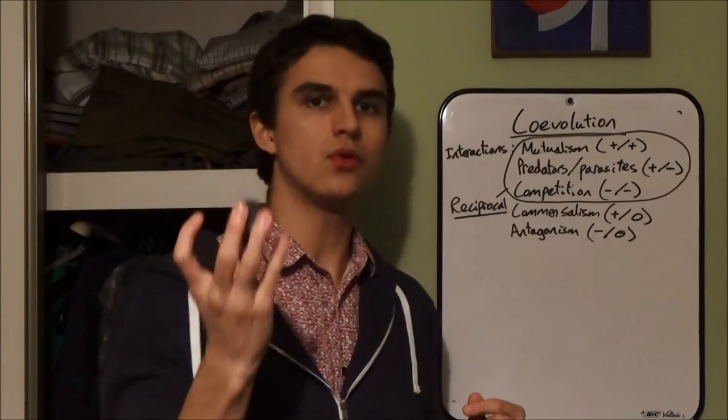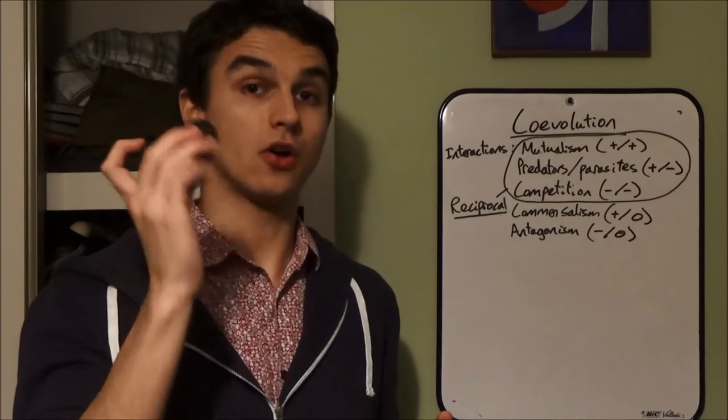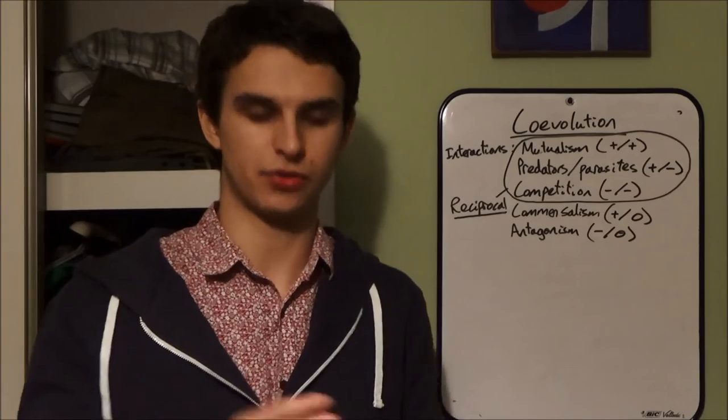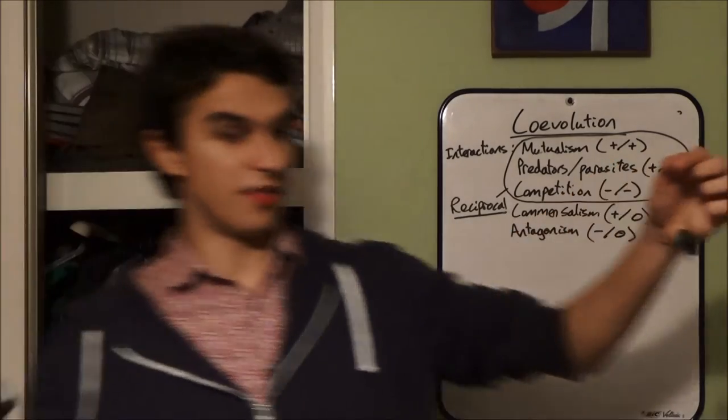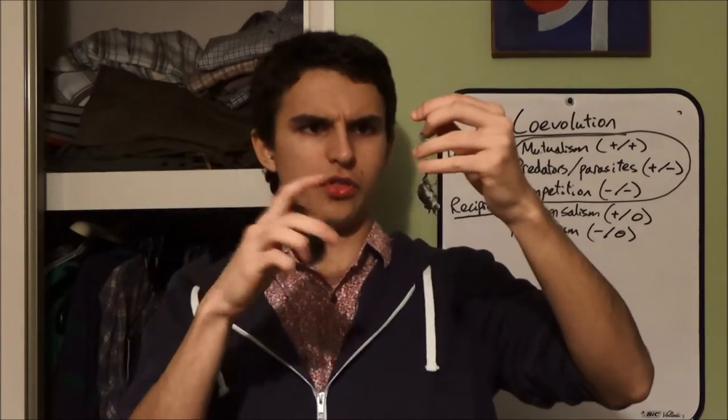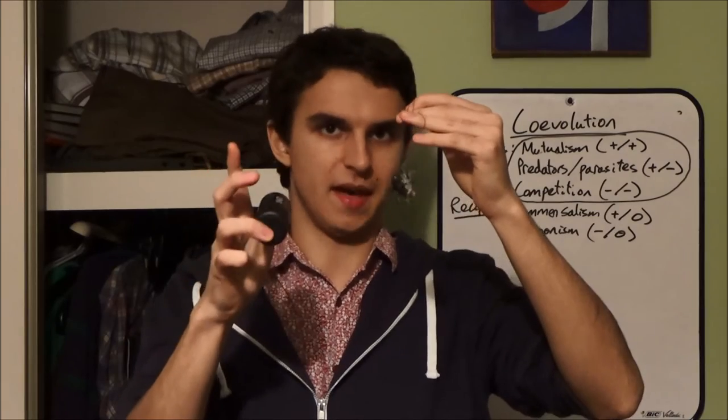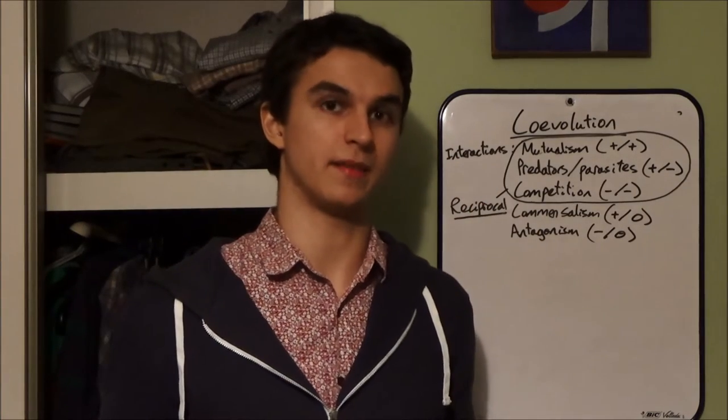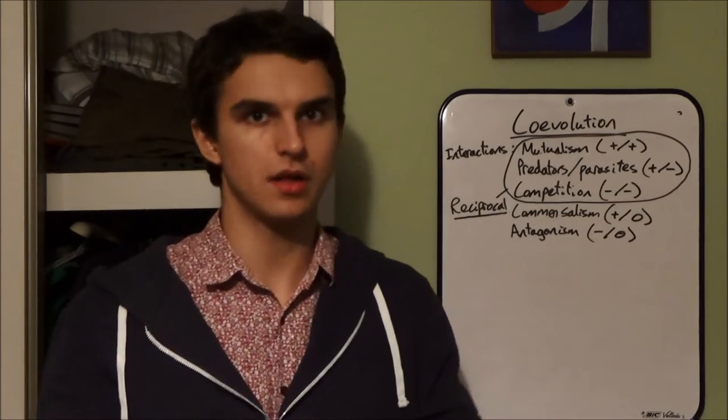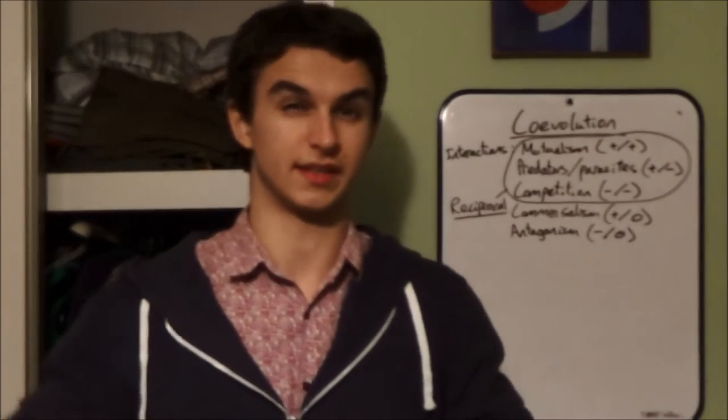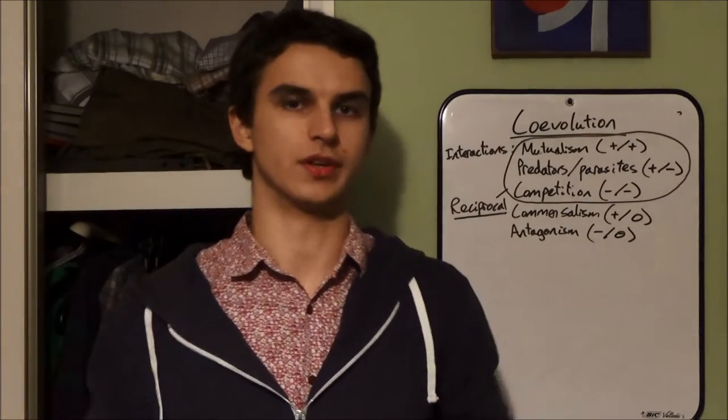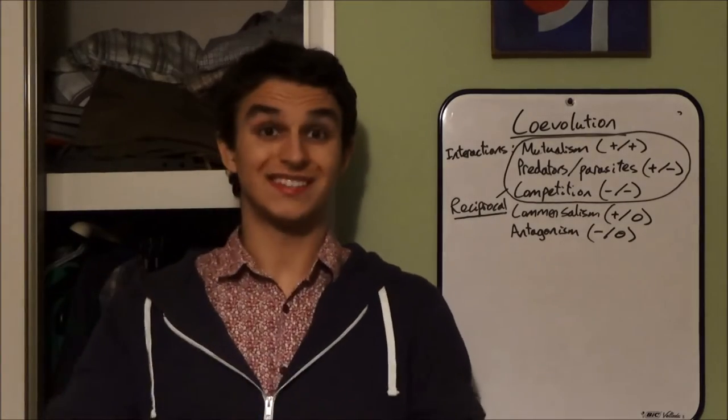So these Barbastell bats must be pretty good at avoiding all these defense mechanisms that the moths have. So what have the bats done? What they've done is they've lowered the intensity of their ultrasonic calls. They haven't changed the frequency, but just the intensity, so the loudness basically. So that means the bats can get a lot closer to the moths before the moths detect that the bat's there. So this is a great anti-defense mechanism by the bat. So that in turn will obviously induce a better defense mechanism by the moths, and they'll carry on going and going and going in this evolutionary arms race.